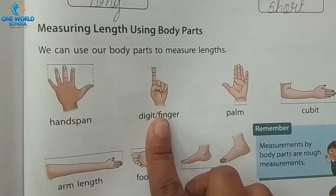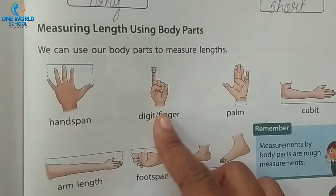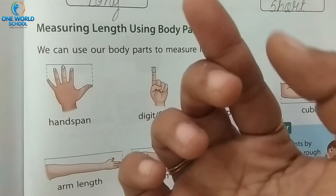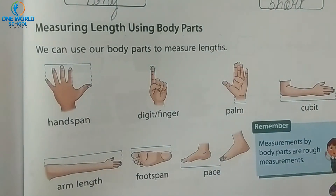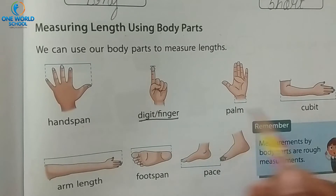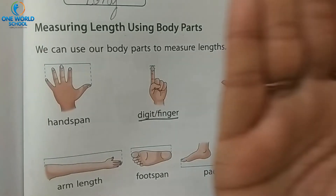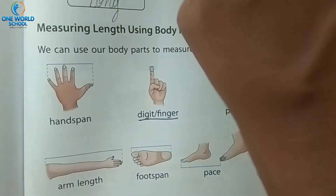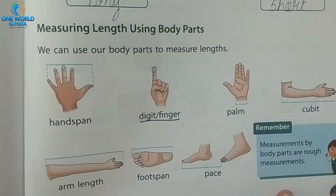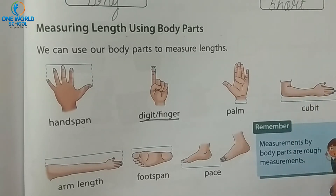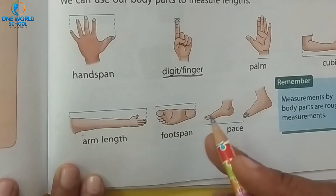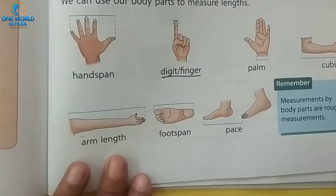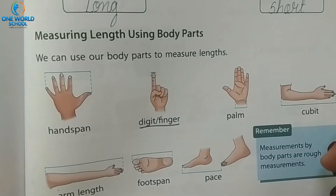Then, digit — we use our fingers to measure: one, two, three, four, five, six. It is digit and finger. Then palm — we can measure steps using our palm. Then cubit — from hand to arms. Then arm length, then foot span, and pace. These are different ways to measure length.